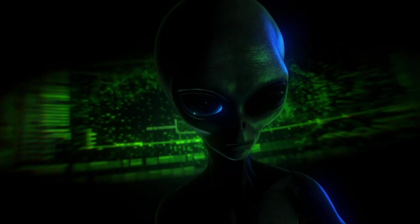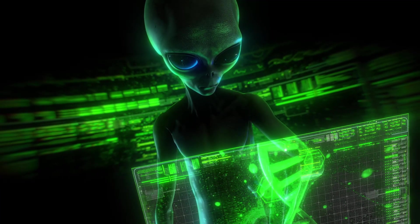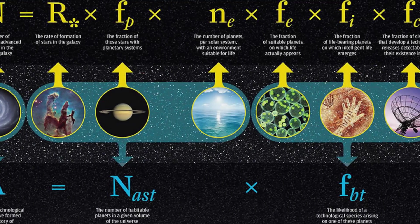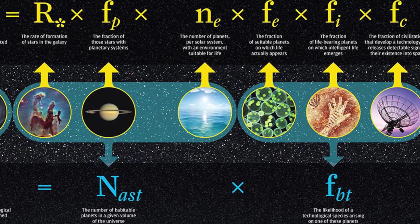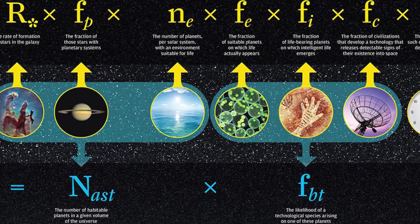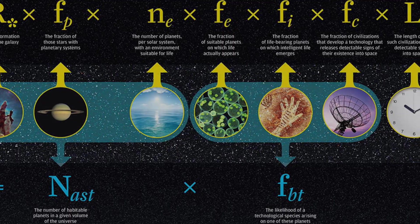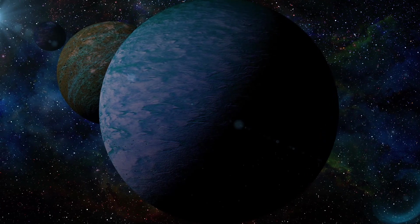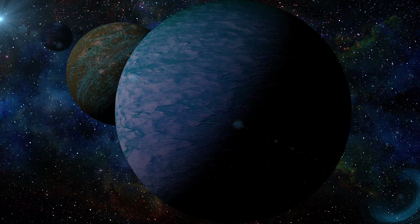Critics argue that the Fermi Paradox is not truly a paradox, since we can only speculate about the existence of intelligent life beyond Earth. However, the Drake equation is employed in this paradox to estimate the number of potential civilizations within our galaxy. This equation, formulated in 1961, conjectured the presence of millions of Earth-like worlds hosting civilizations.